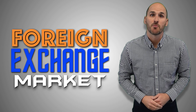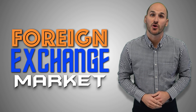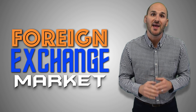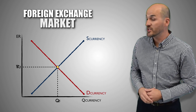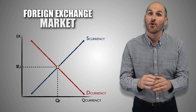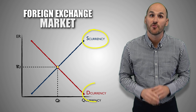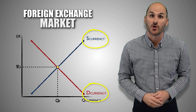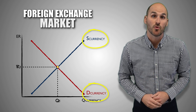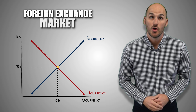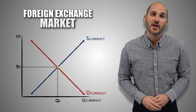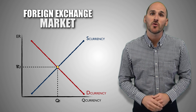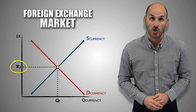The foreign exchange market is the location where international currencies are bought and sold by economic participants at various exchange rates. It's comprised entirely of the supply and demand for an international currency, and each currency around the world has its own market. Through voluntary exchange, the supply and demand for an international currency sets an equilibrium exchange rate in the foreign exchange market.